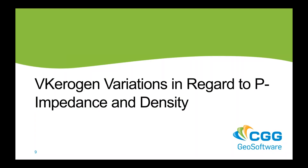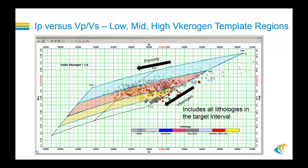Let's look at it in regard to P-impedance and density. Here we see that the porosity and the v-kerogen templates are moving in different directions. Consequently, we have much more sensitivity with regard to variations in v-kerogen and its decoupling from variations in porosity.